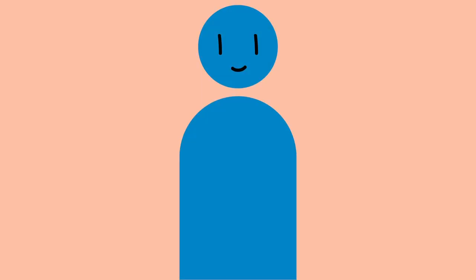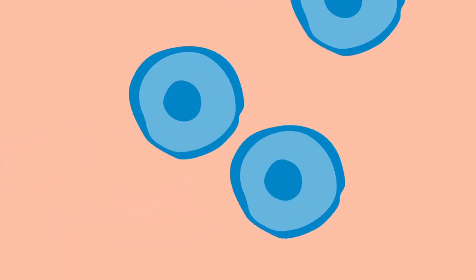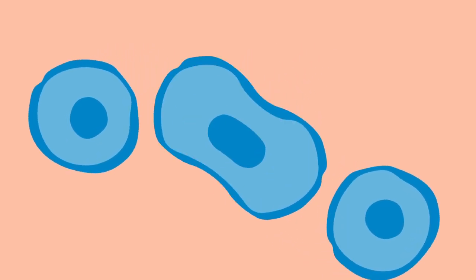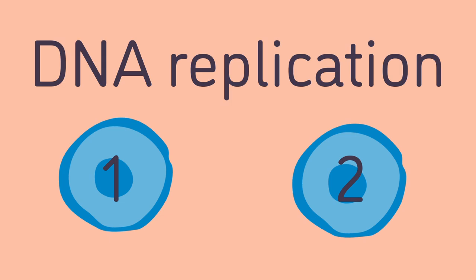The human body contains over 30 trillion cells that constantly divide as we grow and age. Some even divide in just a few hours. Every time this happens, the genomic DNA is copied to create two new cells through a process called DNA replication.